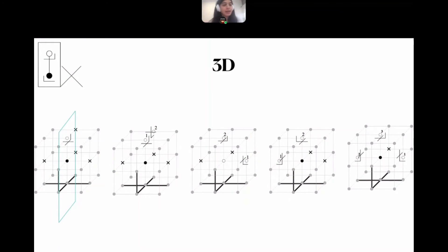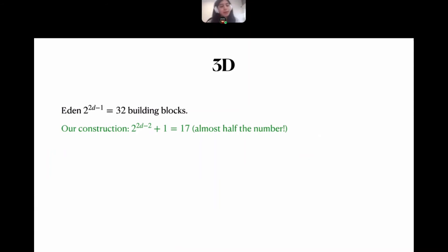The only problem arises in the same case as in 2D: when the cell to the right does not belong to the polycube but the cell to the top does. In this case four building blocks are not enough; we actually need five. Eden's method gave 32 building blocks for three-dimensional polycubes, while our construction gives only 17 building blocks — almost half.